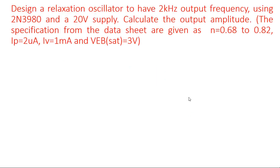Hi everyone, in this video let's see an example problem for the relaxation oscillator using UJT. Design a relaxation oscillator to have 2 kilohertz output frequency, meaning the sweep we are going to generate will have 2 kilohertz frequency, using this 2N3980, which is a UJT transistor number, and a 20 volt supply, which is V_BB.